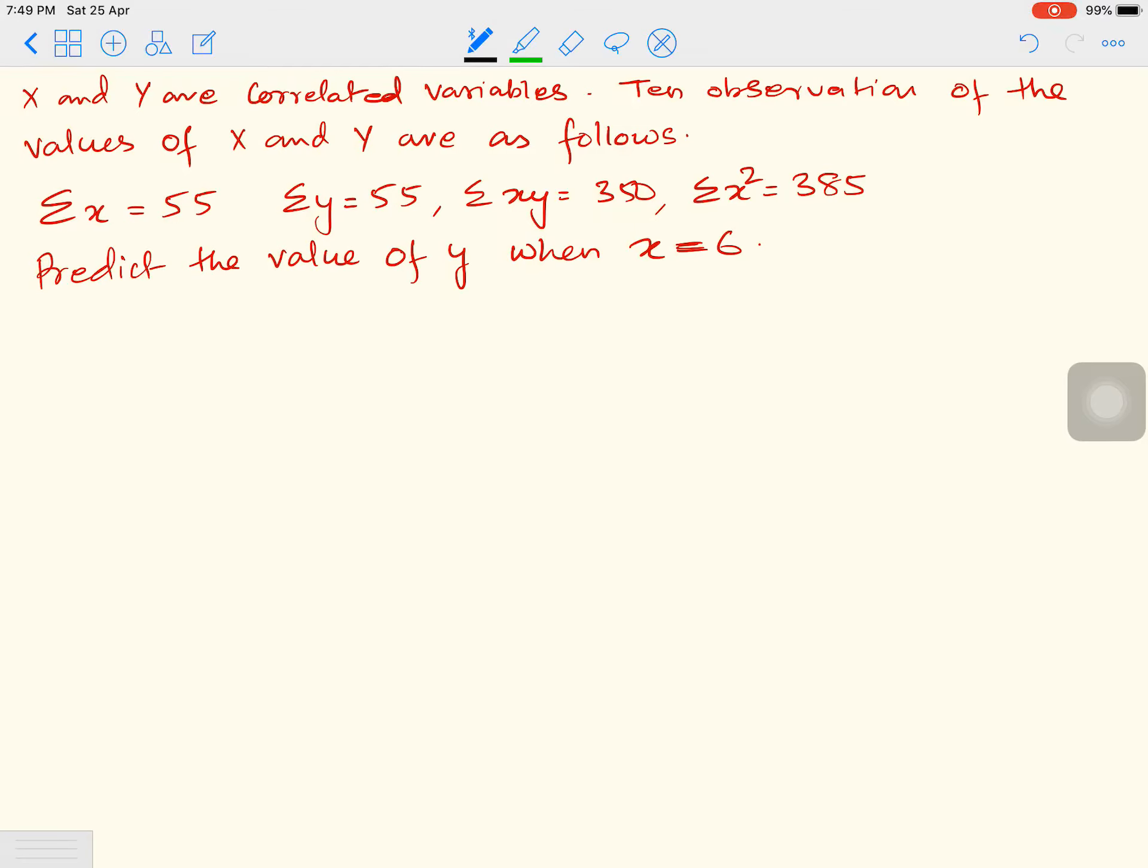This is the second sum. X and Y are correlated variables. Ten observations of the values of X and Y are as follows: Sigma X is 55, Sigma Y is 55, Sigma XY is 350, and Sigma X squared is 385. Predict the value of Y when X equals 6.